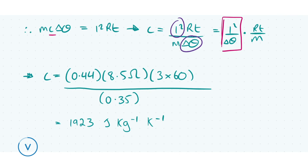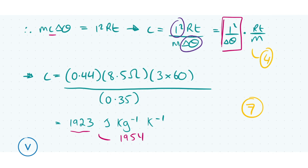The answer is 1923 joules per kilogram per kelvin. You might get a slightly different value — if your slope was closer to the ideal 0.447, you'd get approximately 1954 J/kg/K. Anything in that range is acceptable. There are seven marks for this question: four for correctly deriving the equation by setting mcΔθ equal to I²Rt, and three marks for getting the correct final answer.